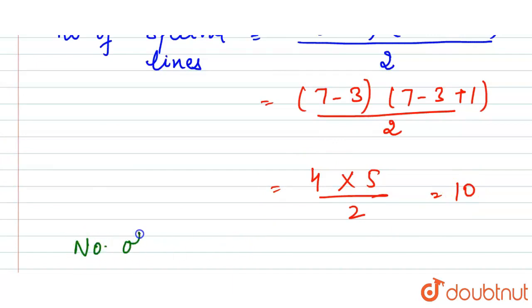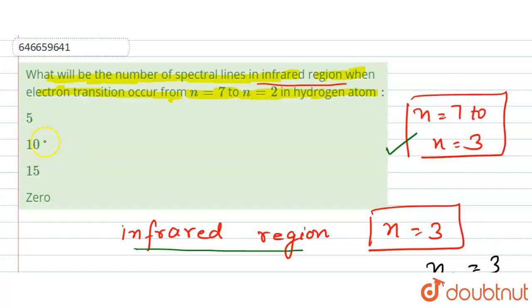It means that the number of spectral lines for the transition in the infrared region are 10. So it means that here our answer is 10.